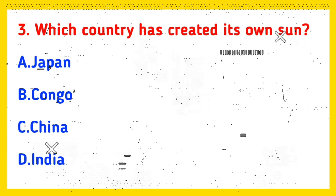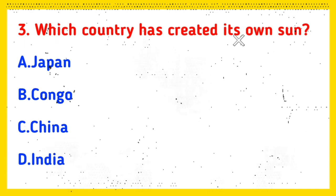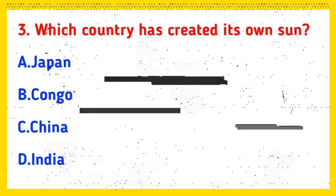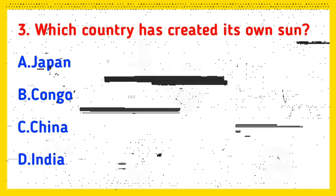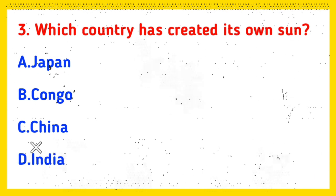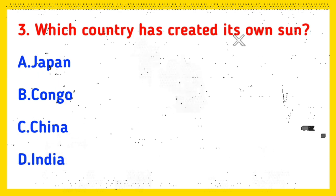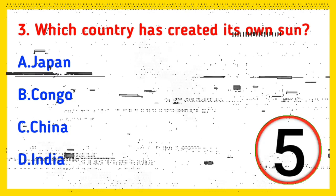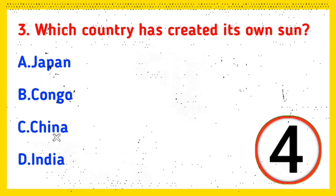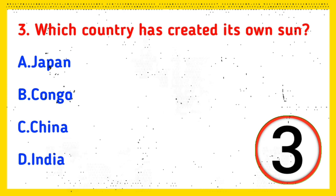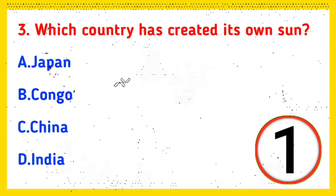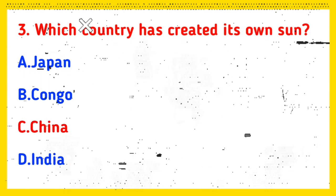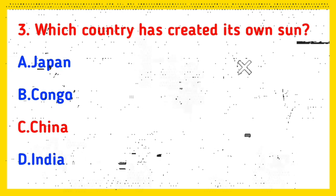Q3: Which country has created its own sun? Option A: Japan, Option B: Congo, Option C: China, Option D: India. And the correct answer is Option C, China.